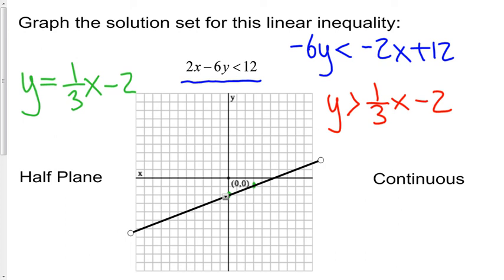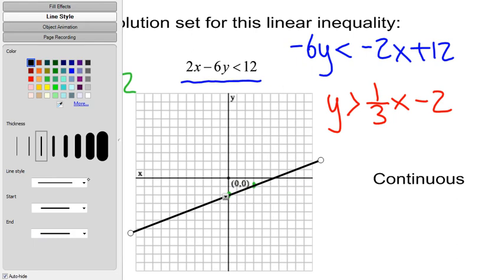Now I mentioned in the last video that a boundary line is solid if our inequality also includes equality. In this case it does not. So what we need to do with our boundary line here is we need to make it a dashed boundary line.